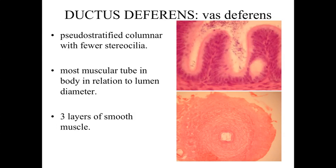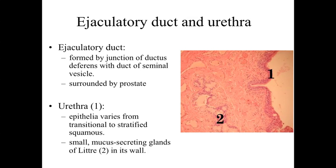After storage in the ductus epididymis, spermatozoa are passed through the ductus deferens, or vas deferens. The lining of the vas deferens is a pseudostratified columnar epithelium with very few stereocilia and relatively few folds. What characterizes it most is the wall: the vas deferens has three distinct layers of smooth muscle surrounding the lumen and is the most muscular tube in the body in relationship to the diameter of its lumen.